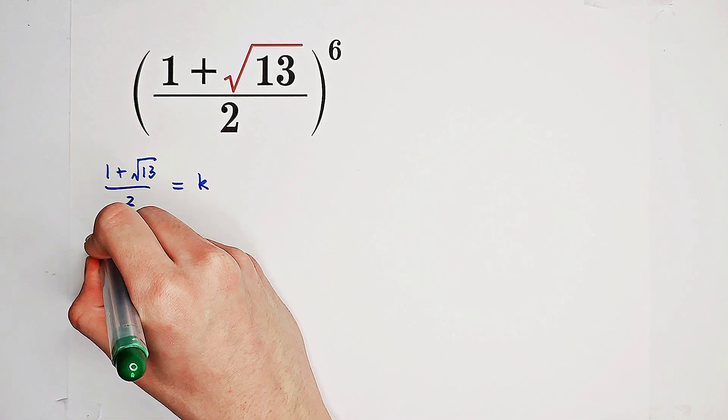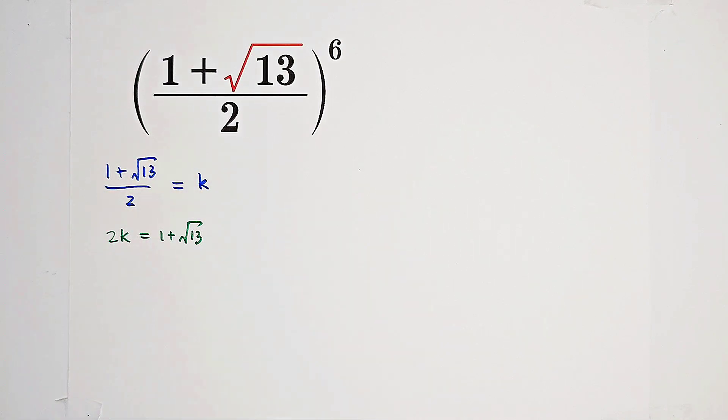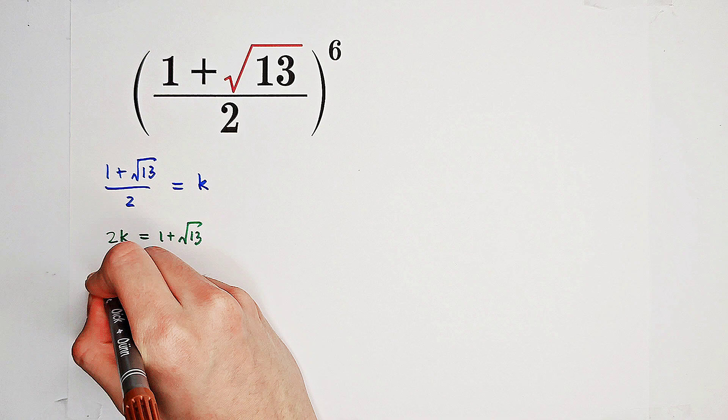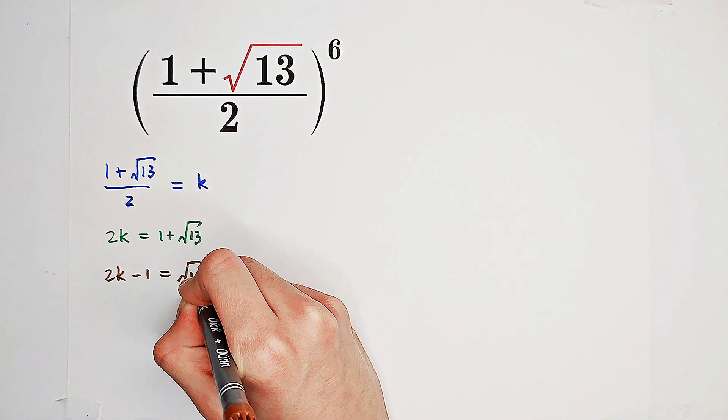Then we can see 2k is equal to 1 plus square root of 13. So 2k minus 1 equals square root of 13.